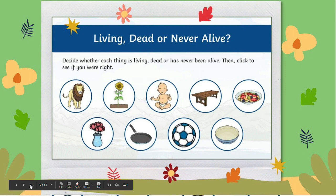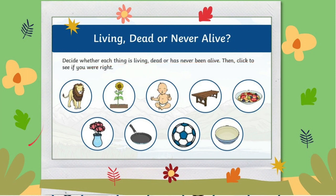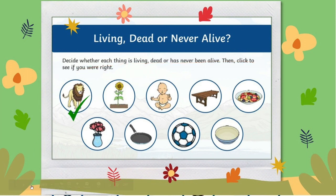Now decide whether each thing is living, dead, or has never been alive. What about this lion? How about this plant or the sunflower? It is living. And this baby is also a living thing.